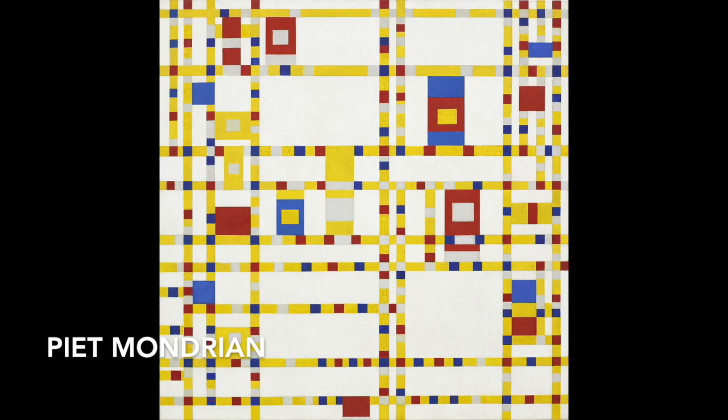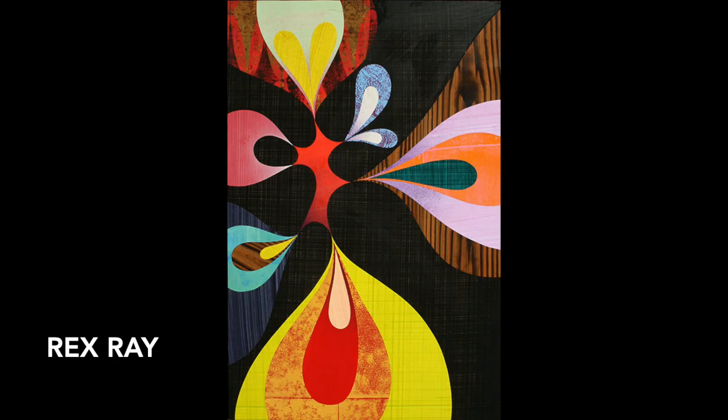Dutch painter Piet Mondrian also used color, balance, repetition, and space in his hard-edge paintings.